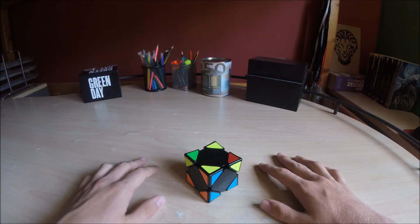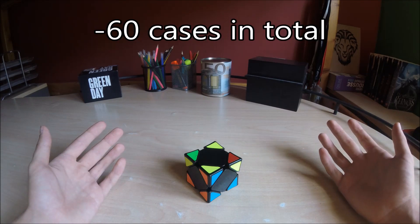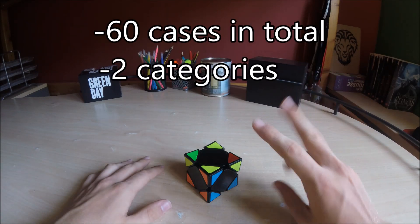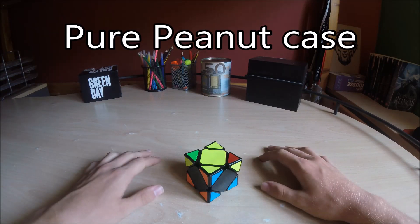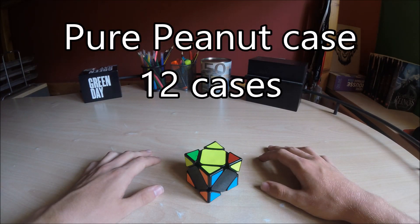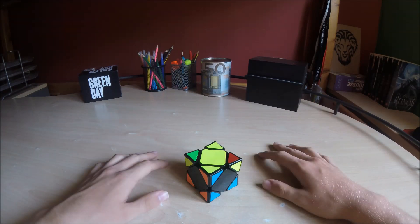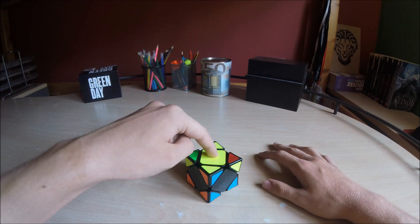Now we start with the Peanut case. There are also 60 cases but 2 categories that we will see now. The pure Peanut case: there are 12 cases and we recognize all of these cases by the adjacent center on the top.